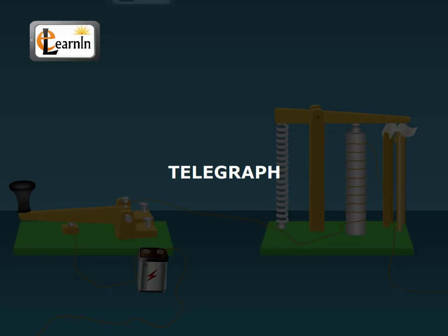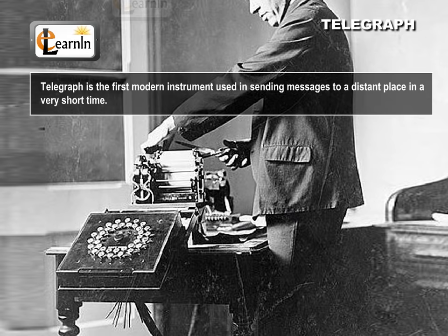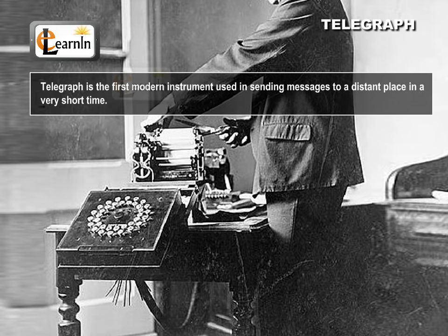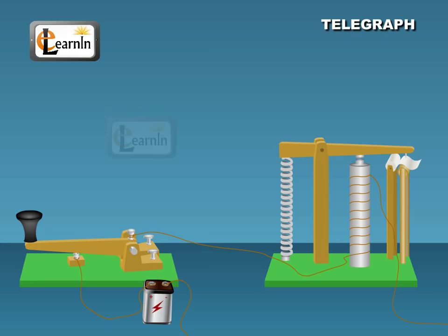The Telegraph. It is the first modern instrument used in sending messages to a distant place in a very short time. The working of a telegraph is made efficient by using Morse code in which each letter is given a code of dots and lines.